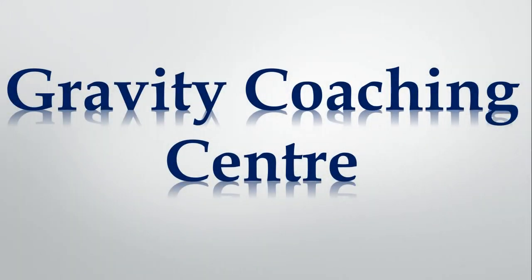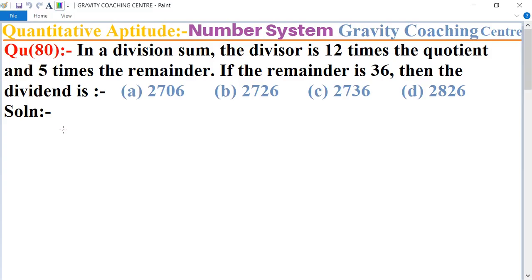Welcome to our Channel Gravity Coaching Center, Aptitude Chapter Number System, Question Number 80. In a division sum, the divisor is 12 times the quotient and 5 times the remainder. If the remainder is 36, then the dividend is?